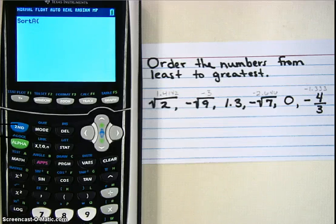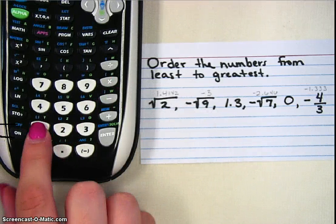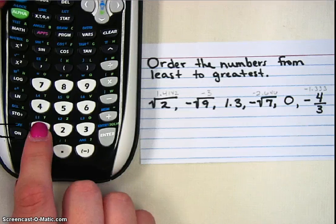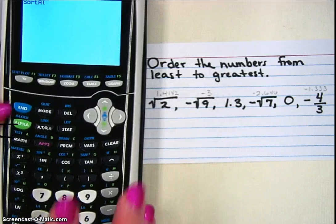Now, all our numbers are in list 1, so I need to tell it to go to list 1. To find the list 1 button, if you look at the number 1, in little blue letters it says L1. Which means I need to hit 2nd, the 2nd button is up here at the top, the blue button.